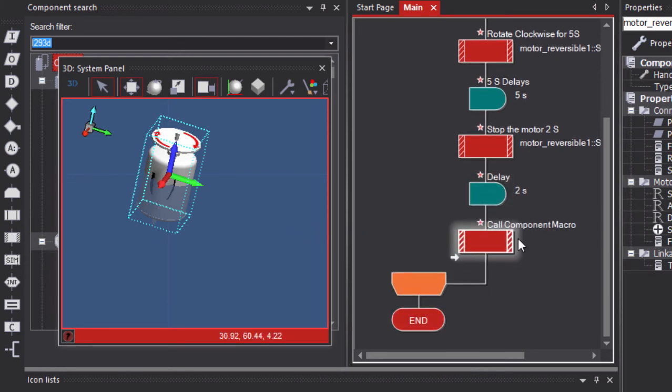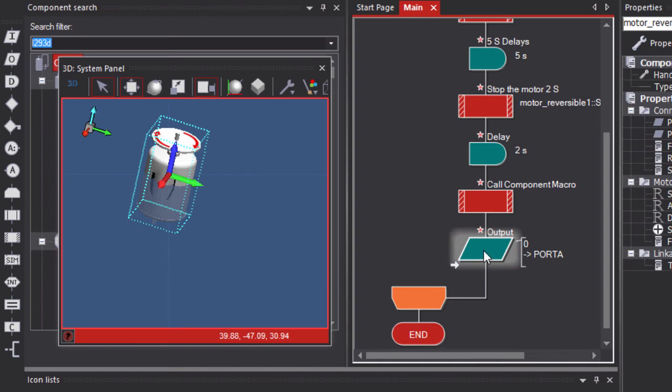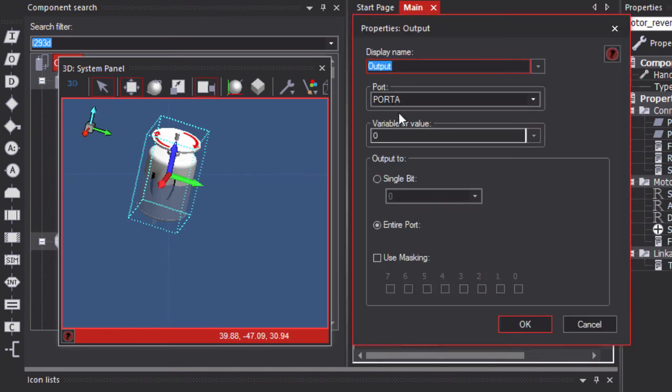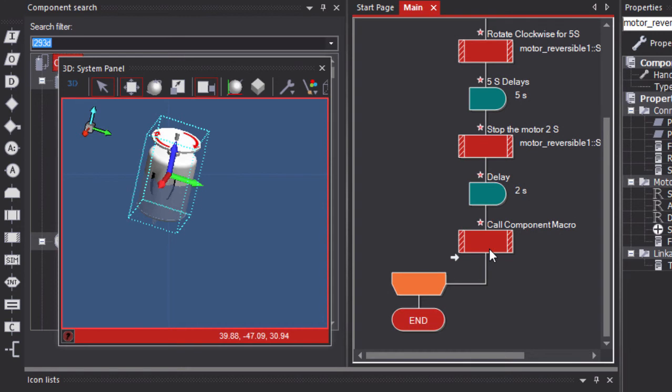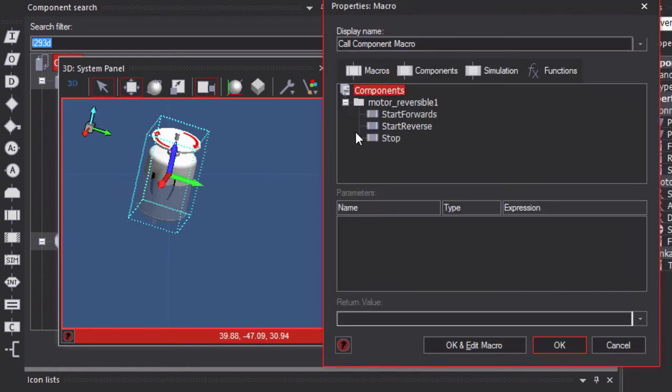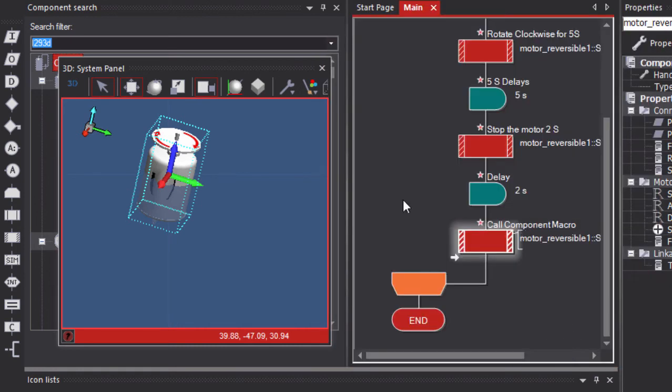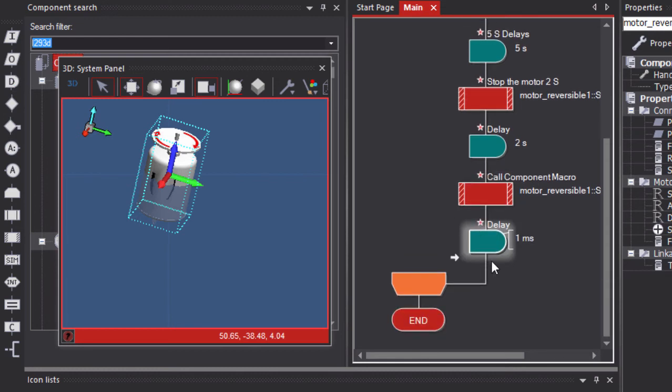Component mechatronics again. By the way, instead of using the component mechatronics, we can also use the output. It's going to give us the same outcome. Select the output and we are connected to Port B. In this case you can select the value that we want to send to Port B. In this case it's going to be 2. But to make it simple we'll just use the component mechatronics. And here it's going to be reverse. Start reverse. And the delay is going to be 5 seconds again.